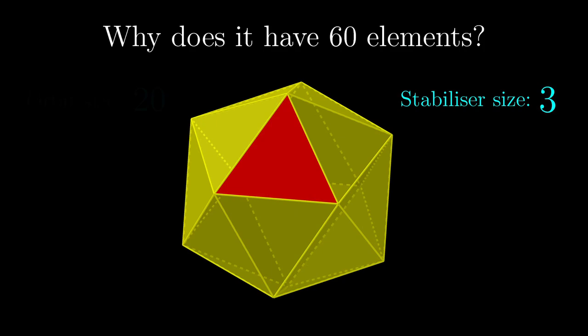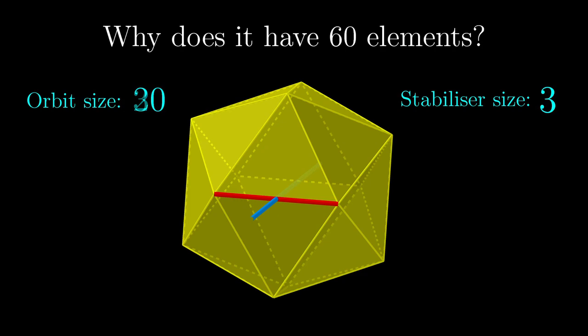Hence, multiplying the sizes of the orbit and the stabiliser together, there are exactly 60 rotational symmetries of the icosahedron. Here, we only choose the action on faces, but if we consider the action on edges, the orbit size would be 30, and the stabiliser size would be 2, also giving us 60.